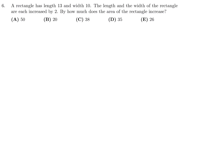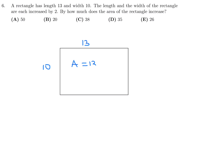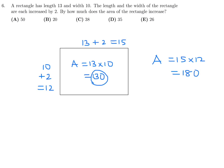A rectangle has length 13 and width 10. The length and width are each increased by 2. The initial area is 13 times 10, which is 130. After adding 2 to each dimension, the new dimensions are 15 and 12, giving a new area of 15 times 12, which is 180. The area increased by 50.